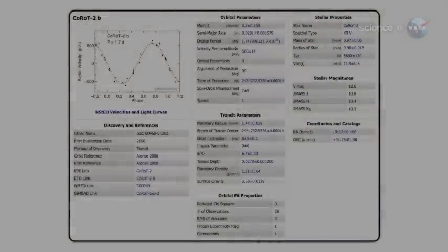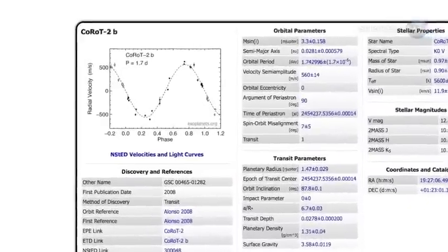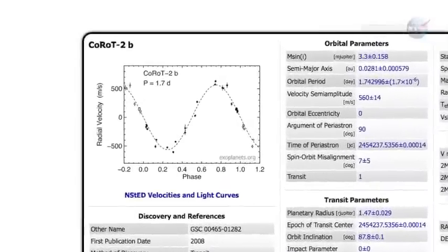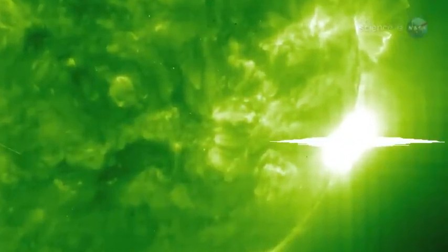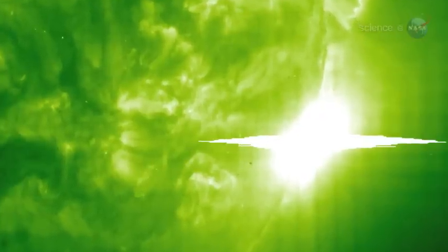On the planet called Koru 2b, it could happen almost every night. Located about 880 light-years from Earth, the gas giant is routinely blasted with X-ray solar flares 100,000 times stronger than anything we experience on Earth.